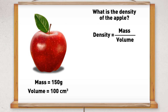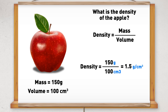So the density equals the mass of 150 divided by the volume of 100, which is 1.5. As the mass is in grams and the volume is in centimetres cubed, the units for the density are grams per centimetre cubed. So the final answer is 1.5 grams per centimetre cubed.